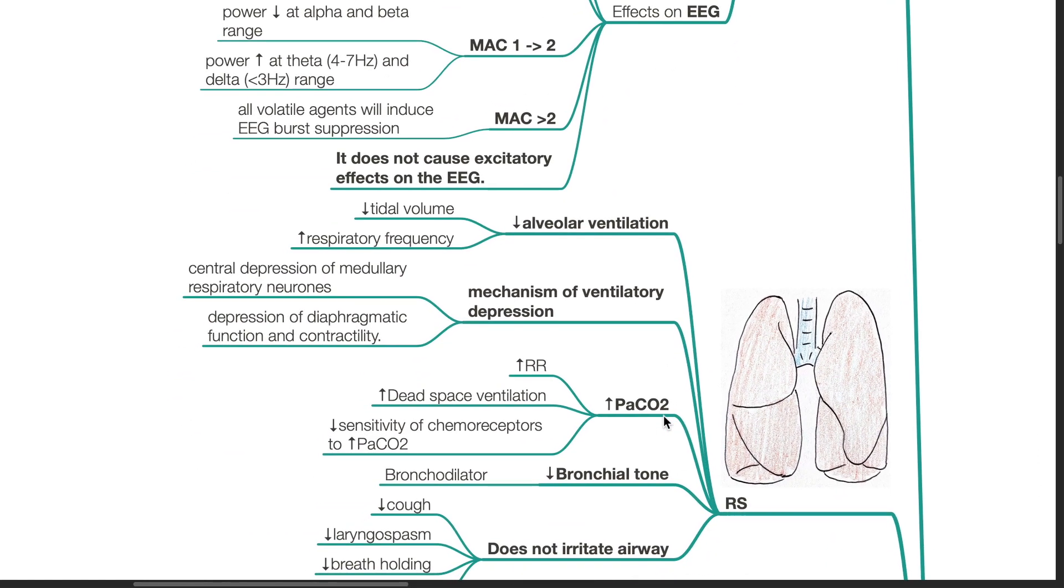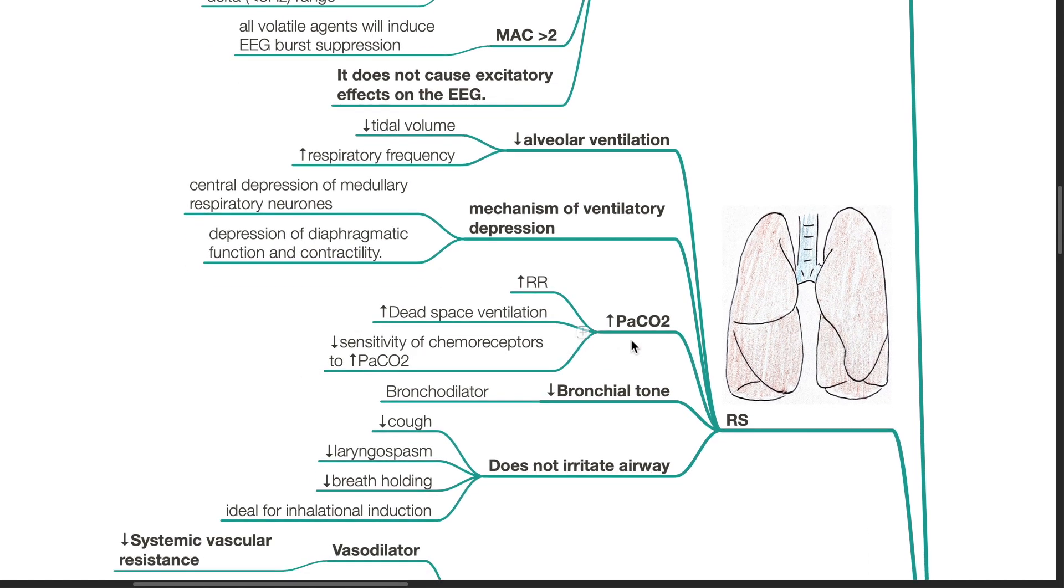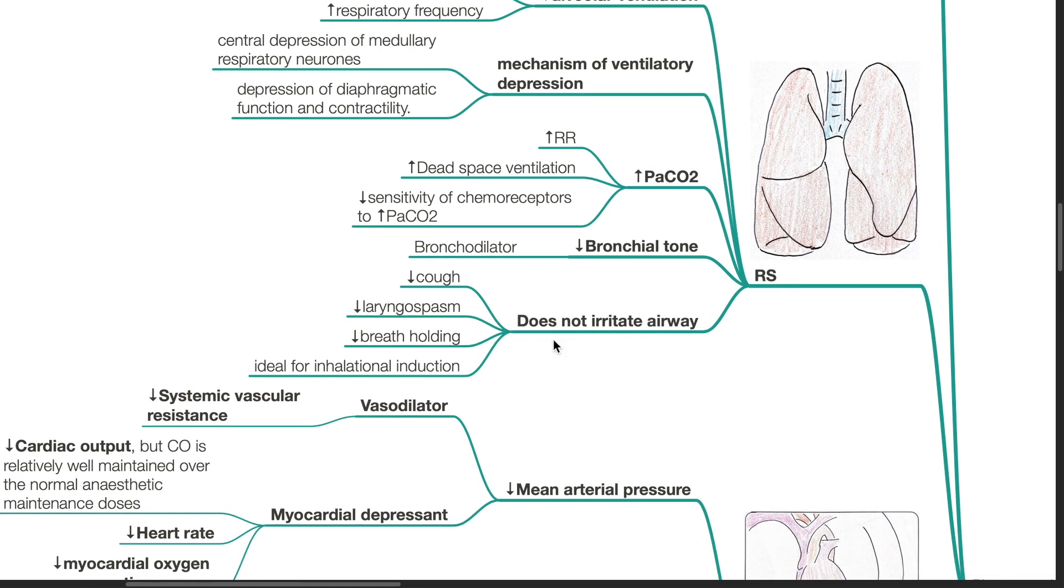Effects on the respiratory system. There is decrease in alveolar ventilation, decrease in tidal volume, and increased respiratory frequency. Regarding the mechanism of ventilatory depression, there is central depression of medullary respiratory neurons and depression of diaphragmatic function and contractility. PaCO2 increases as respiratory frequency increases and dead space ventilation increases. There is decrease in sensitivity of chemoreceptors to PaCO2. There is decrease in bronchial tone. Sevoflurane is a bronchodilator. Sevoflurane does not irritate the airway. There is very low incidence of cough, laryngospasm, breath holding, and it is ideal for inhalational induction.